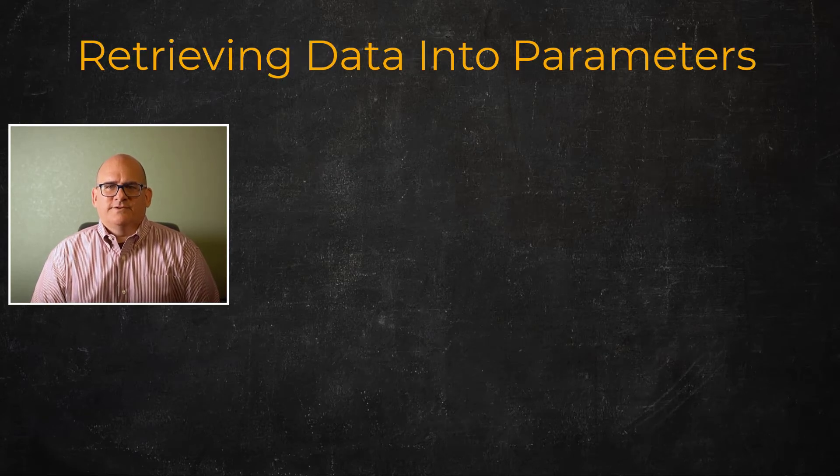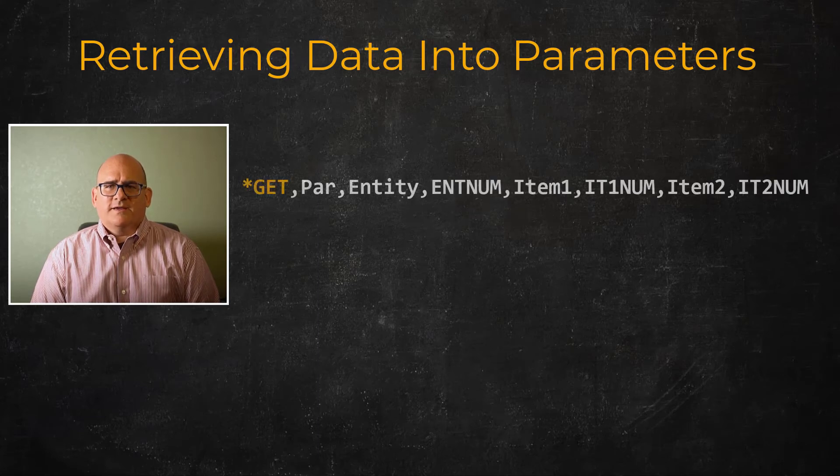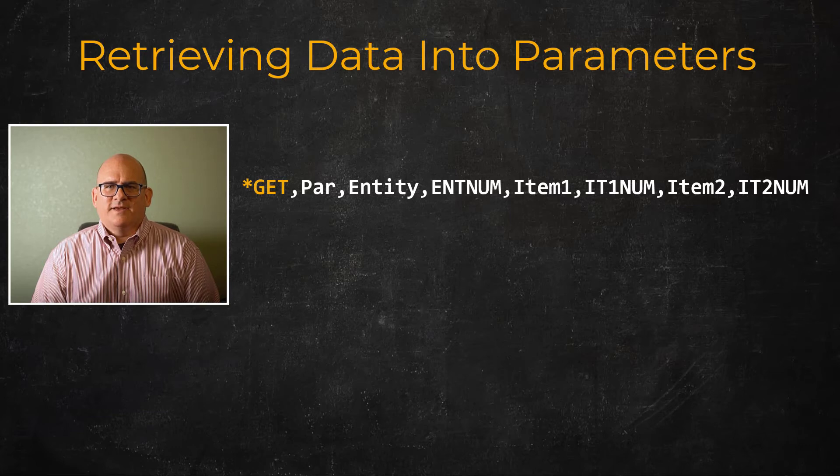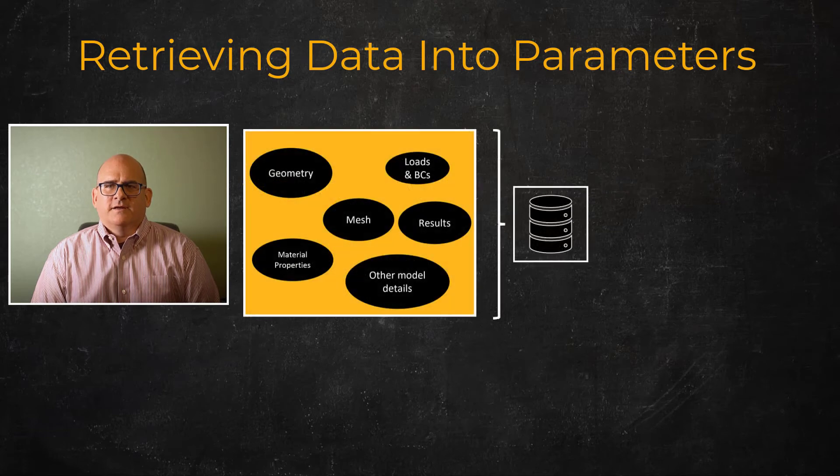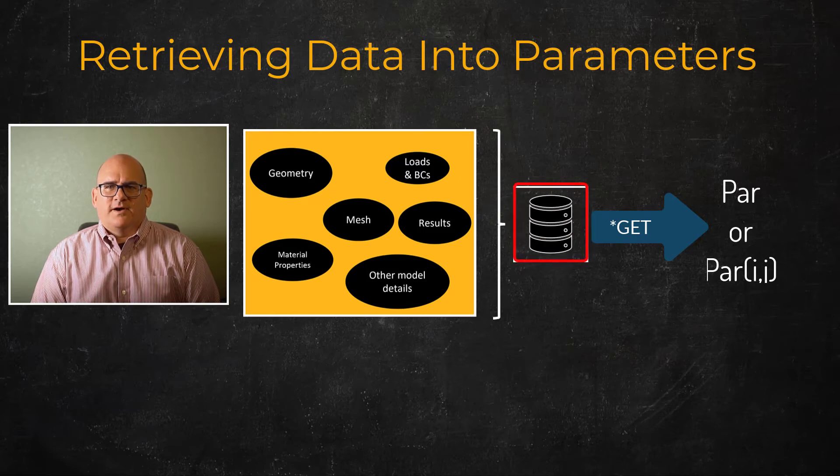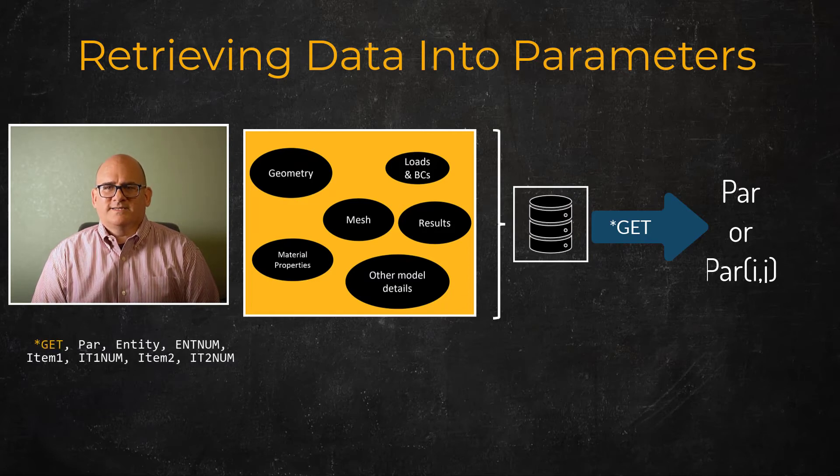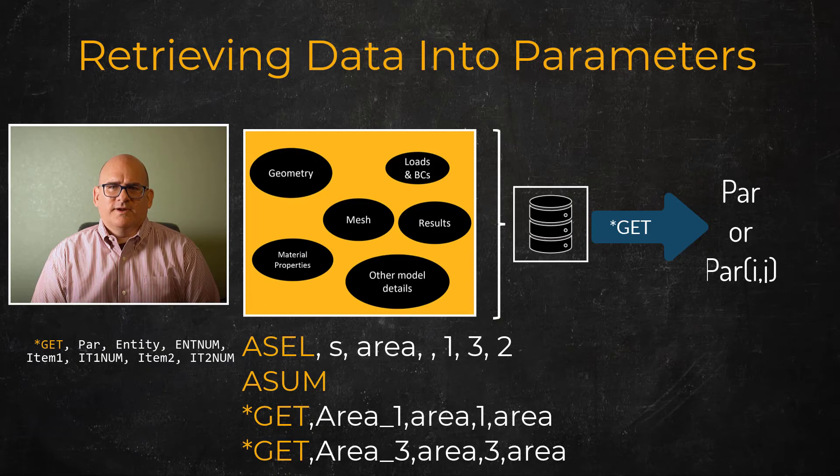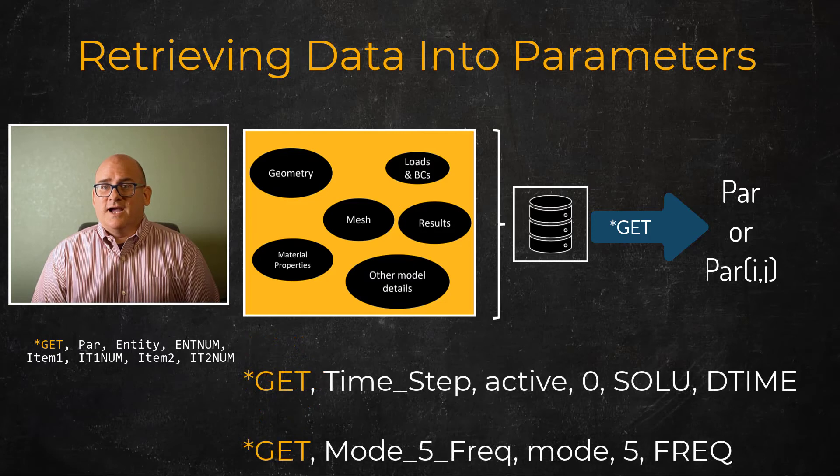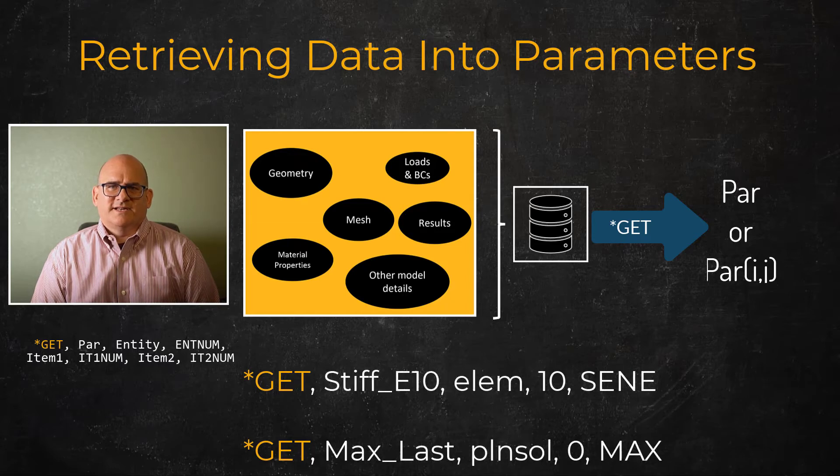Lastly, model information can be retrieved and stored into parameters. The *GET command retrieves a single value of a specific item and stores it as a scalar parameter or into an array specific element location. The available data is that active data stored in the computer's memory at the time. This includes solid model and mesh data, material data, and results, to name a few. Examples include for pre-processing: the actual area of area number one, the Y location of node number 27; for solution: the current time step size, the frequency of mode number N; for post-processing: the stiffness energy of element 10, the maximum value of the last contour plot.